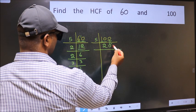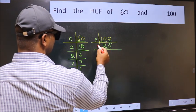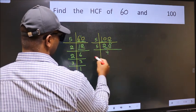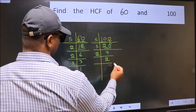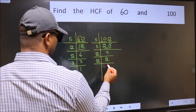This 0 comes down as is. Now 20: 5 times 4 is 20. Now 4: 2 times 2 is 4. Now 2 is a prime number, so 2 times 1 is 2.